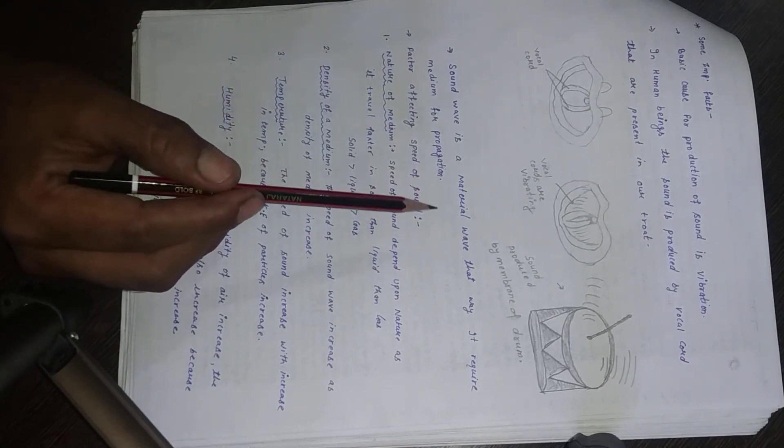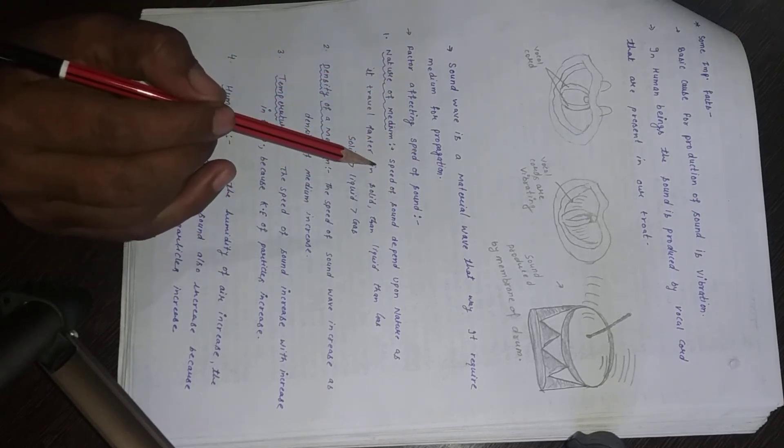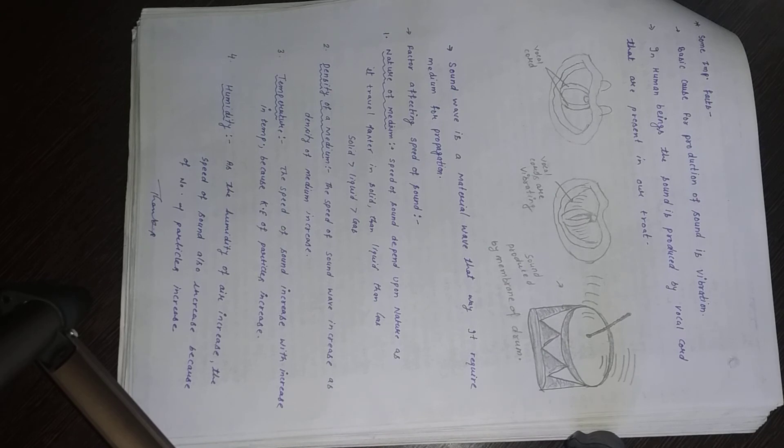Sound is a mechanical wave, so it requires a medium for propagation. The factors affecting the speed of sound — the first factor is the nature of the medium. The speed of sound depends on what kind of medium it travels through — solid, liquid, or gas. Sound travels faster in solids than in liquids, and faster in liquids than in gases.